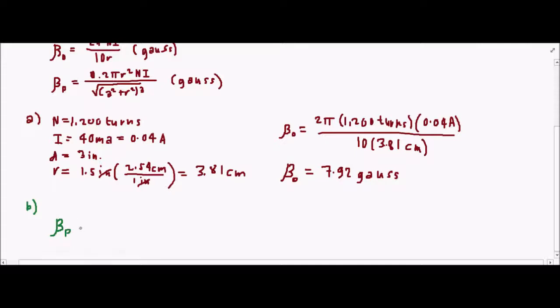We have β_p, so we still have 0.2π times r², using the same radius converted to centimeters, 3.81 cm squared, times the same number of turns and the same current of 0.04 amps.